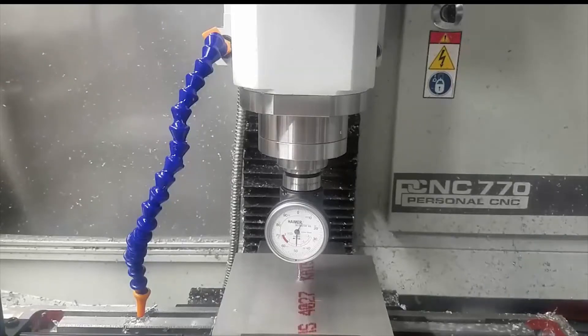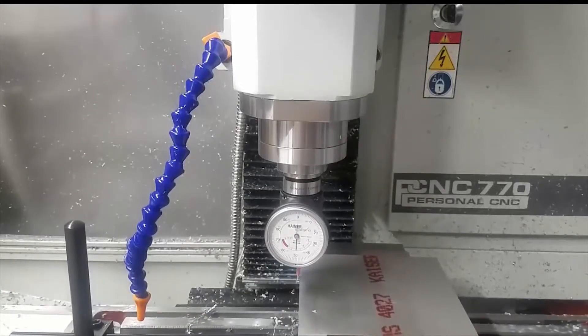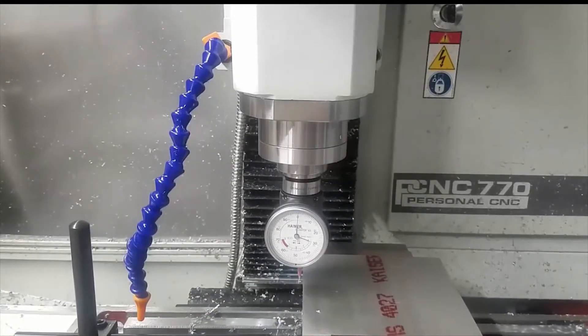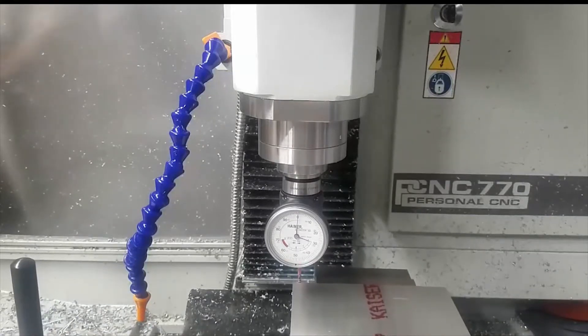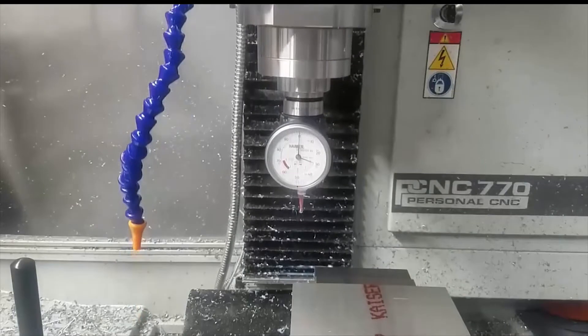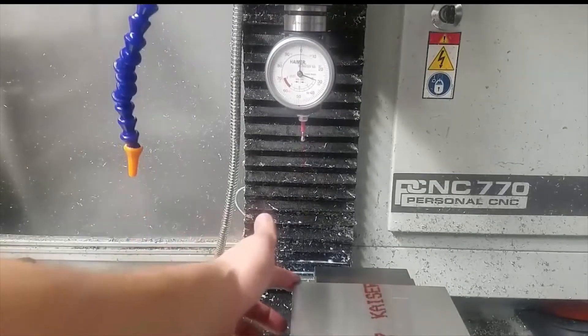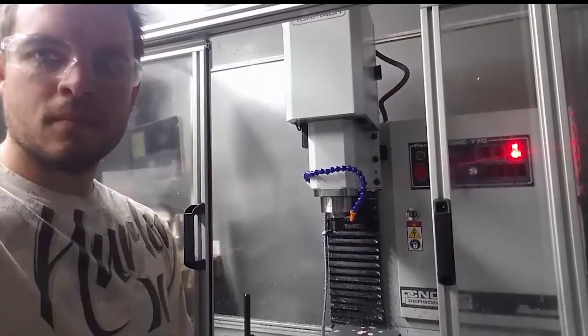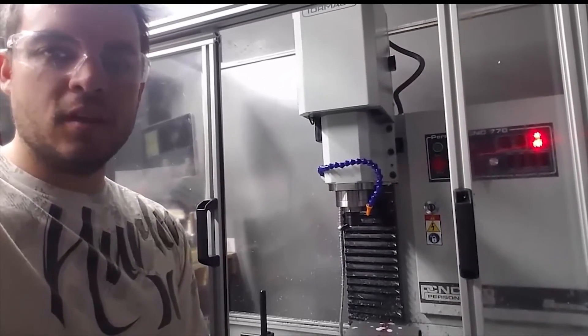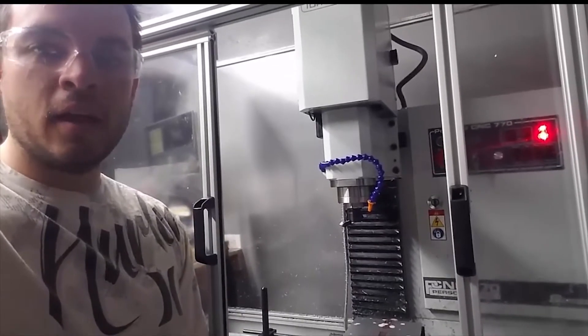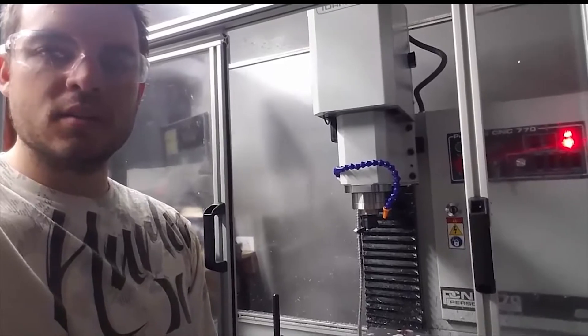We'll do the same thing for X and Y. Now we know that G54 is at this back left hand corner. All right, now that we have everything indexed in the machine properly, we're gonna go ahead and give this a cycle start and I'm gonna run this first couple ops without coolant that way you can see what's going on.